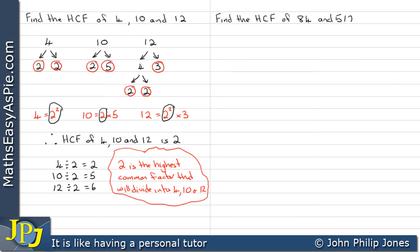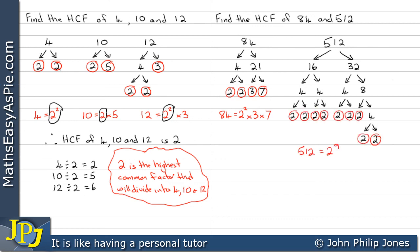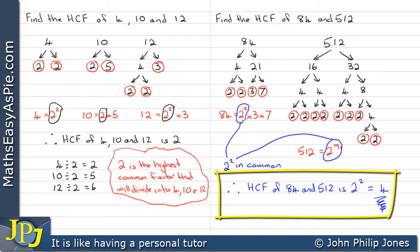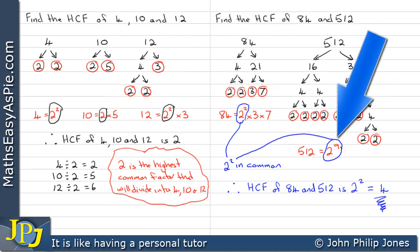Find the highest common factor of 84 and 512. We express each number in its prime factors. We can see 84 is 2² times 3 times 7. We do the same with 512, producing the factor tree, and we end up showing that 512 is 2⁹. Now we see what they've got in common — they've got 2² in common. Therefore, the highest common factor of 84 and 512 is 2², which is 4. So 4 is the highest common factor of 84 and 512. We had a choice between 2² and 2⁹, and we chose the 2².